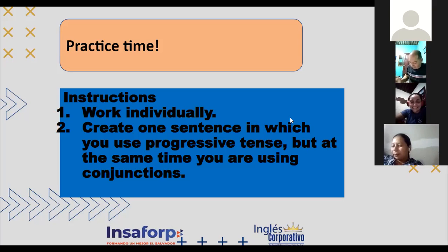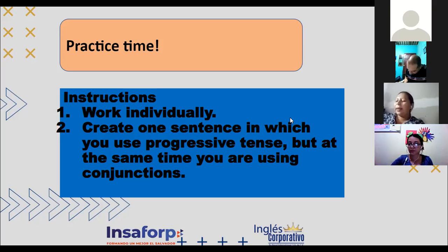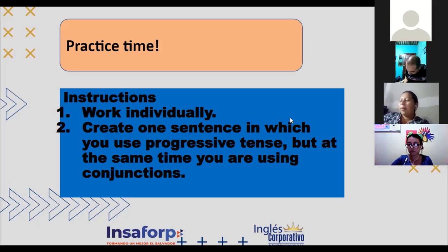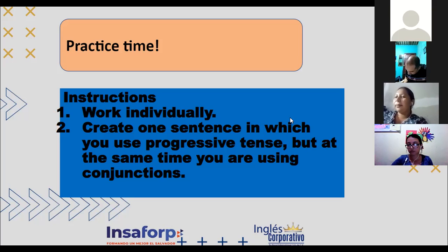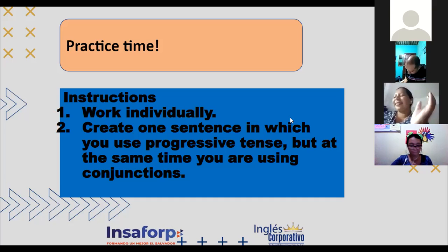Esther: Steven is watching videos and playing ball, but he is not sleeping. Mire qué interesante — 'he is not sleeping' está correcto. En la primera usted puso 'are', pero es 'is' porque es tercera persona singular. Estamos bien. Thank you.